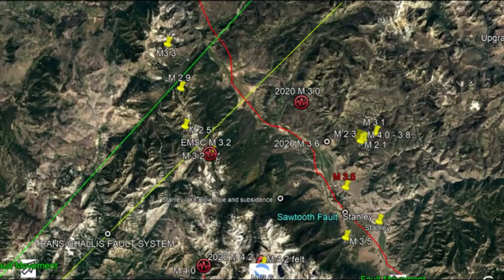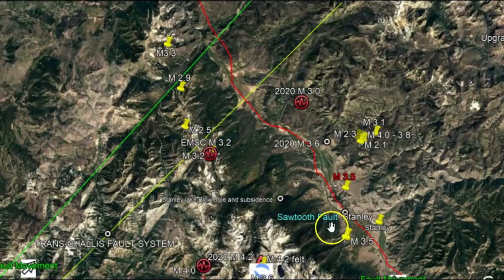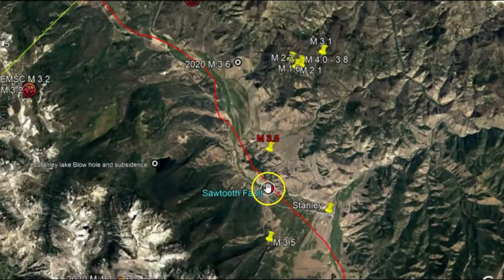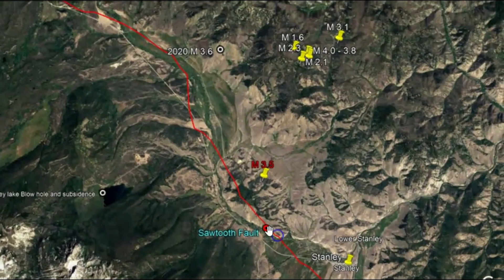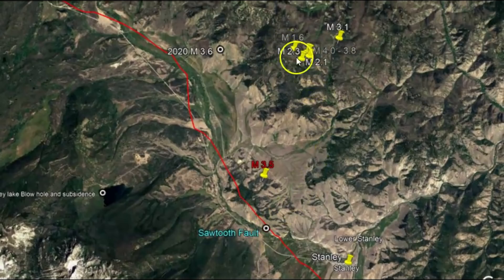And if Yellowstone ever does have a major eruption, yeah, you guys would be caught in that explosion as well. So down here we have the town of Stanley right there. And then up here is the latest earthquake, the magnitude 2.3.